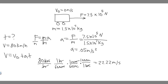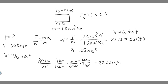So 22.22 meters per second is our final velocity. Using v equals v sub 0 plus a times t: the velocity we're trying to reach is 22.22, the initial velocity is 0 since it starts from rest, and the acceleration is 0.05. So we have 22.22 equals 0.05 times t. Dividing both sides by 0.05 gives us t.